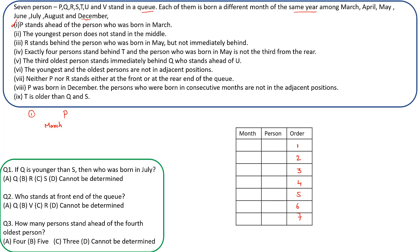The second clue says the youngest person does not stand in the middle. Since all are born in the same year, the person born in December is the youngest. So we can directly note that position 4 (the middle) will not have December.